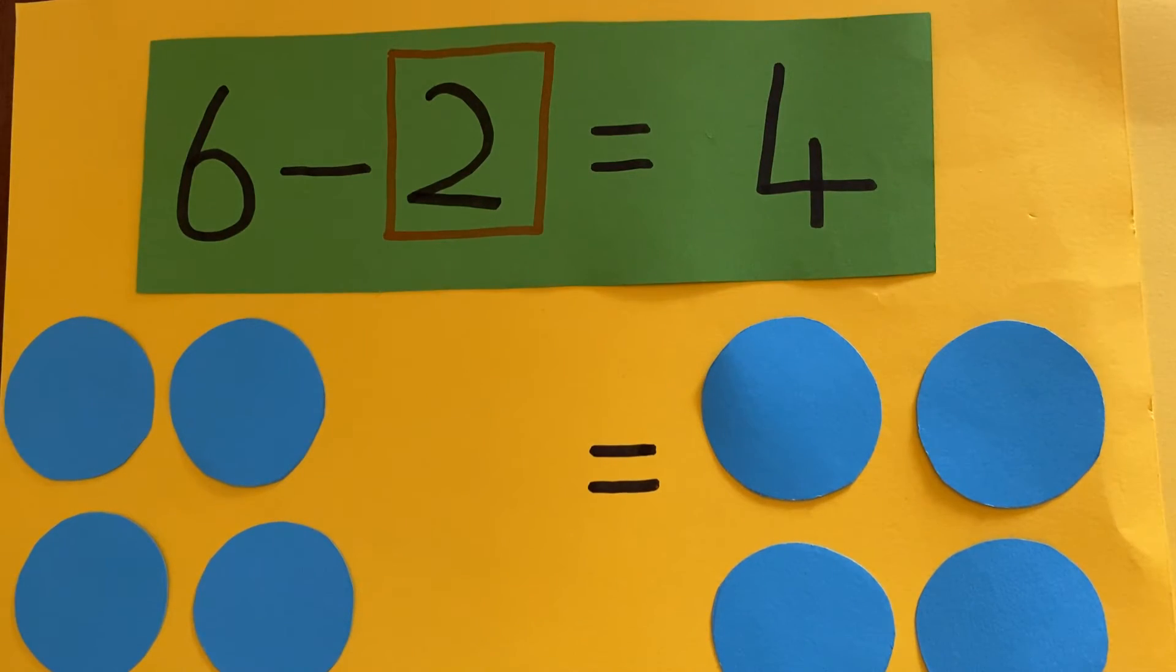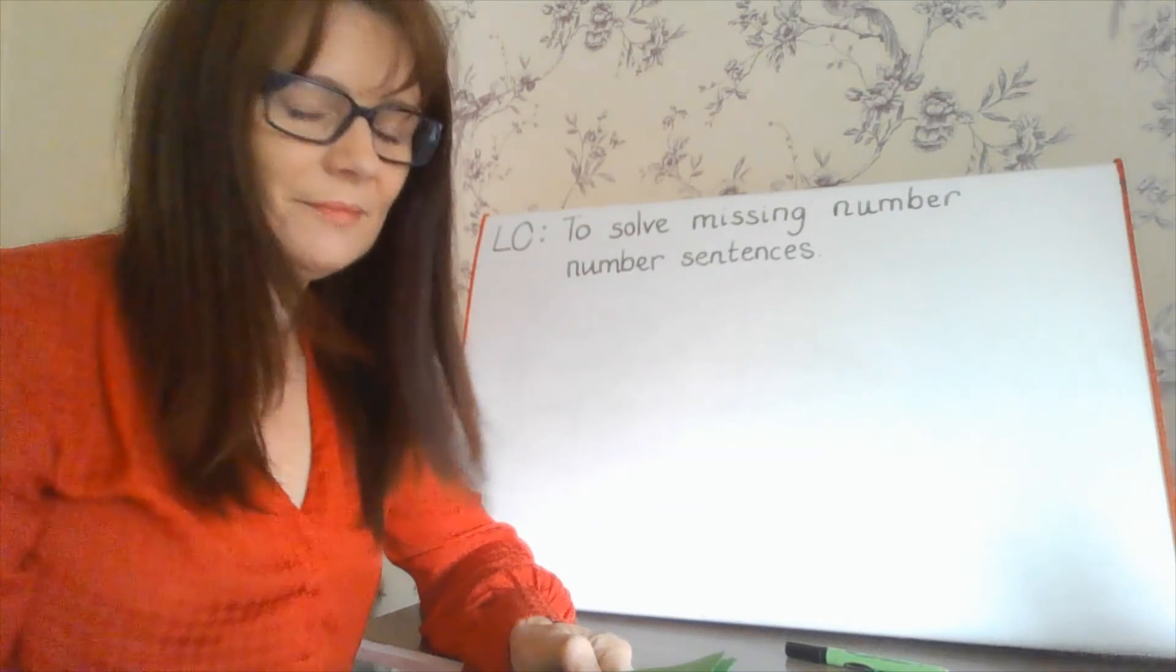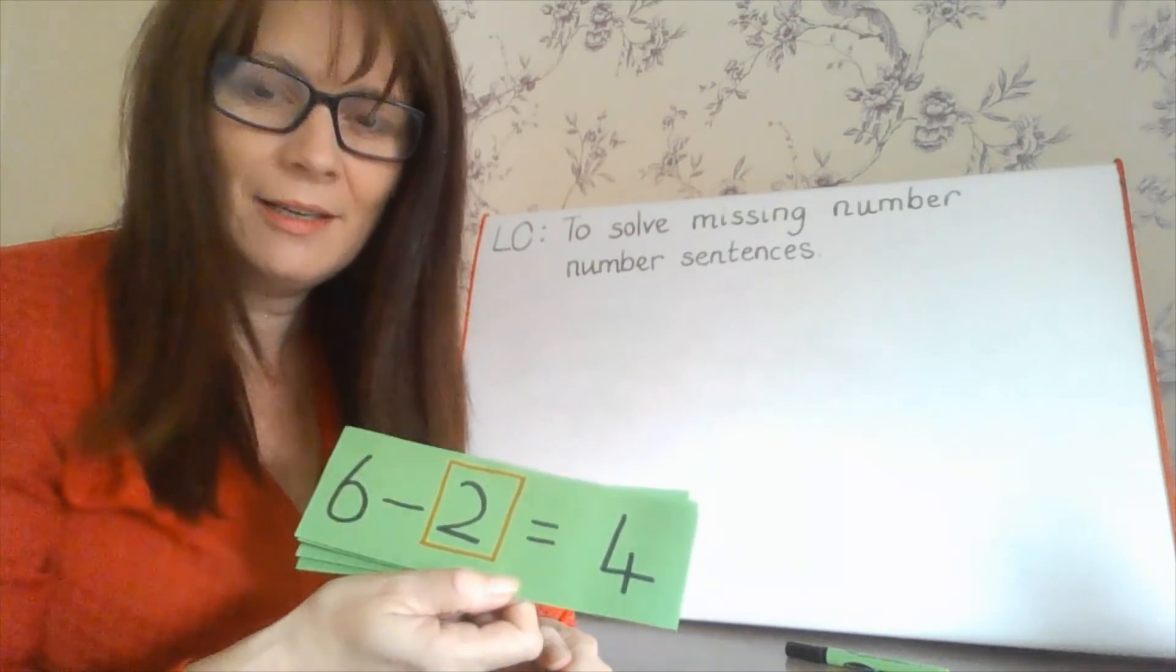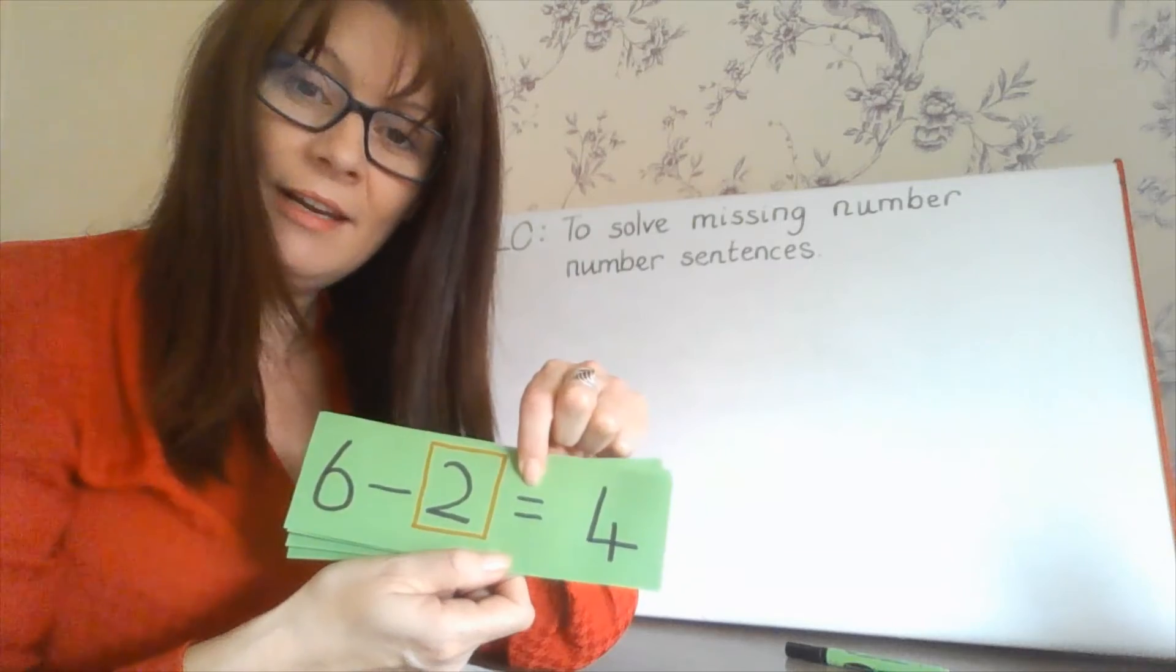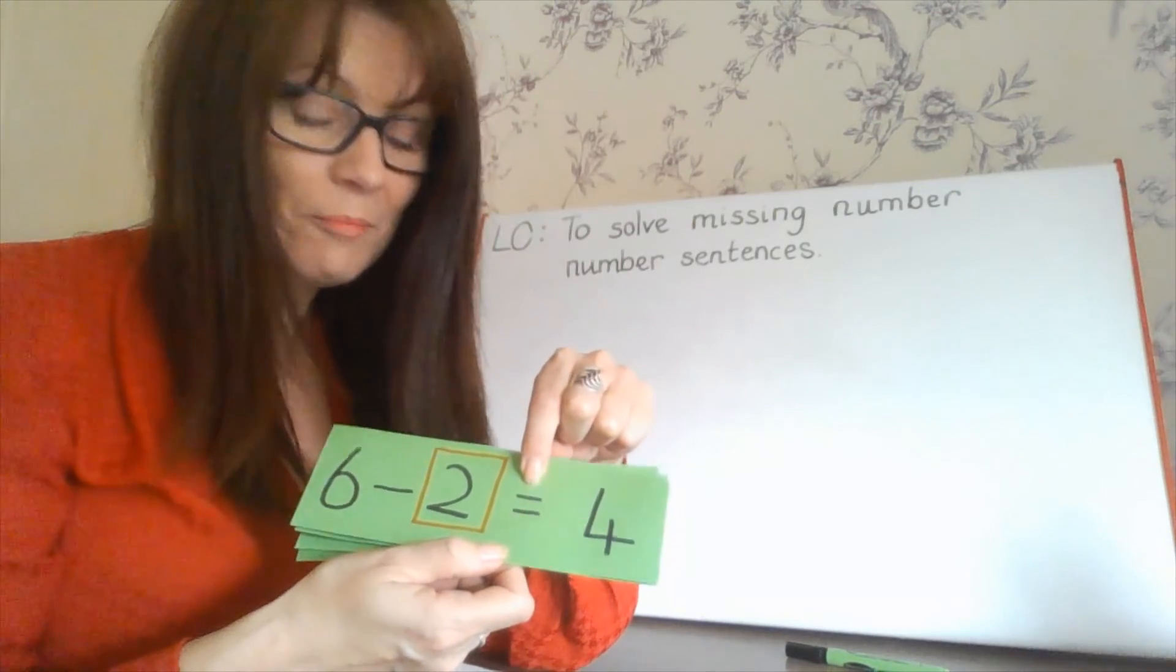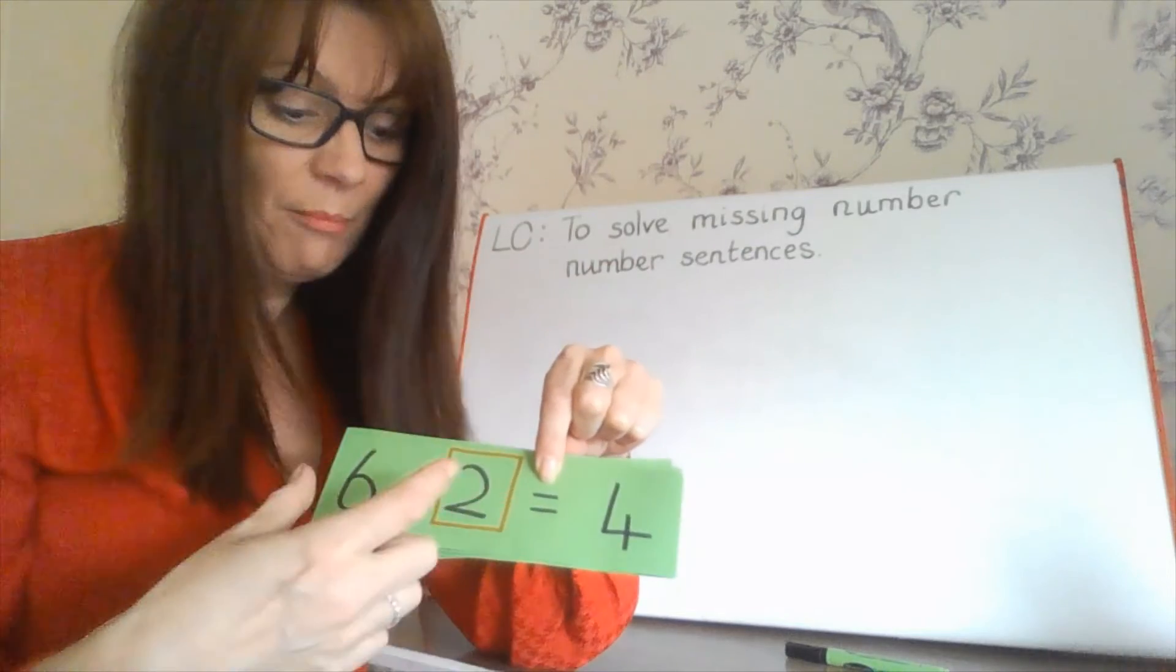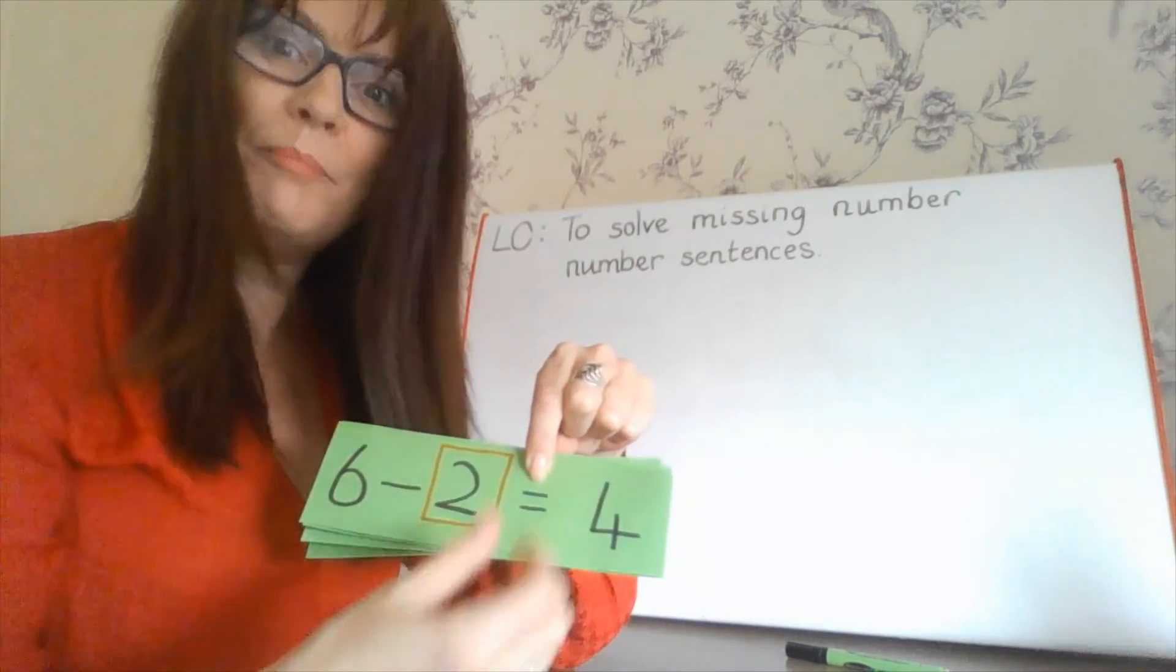One, two, three, four. Those were some pretty easy number sentences, weren't they? But it shows that the equal sign is very important because it has to be the same value, the same number, both sides, has to balance.